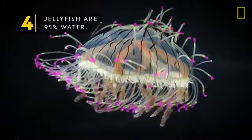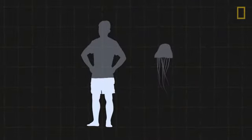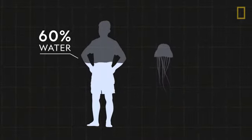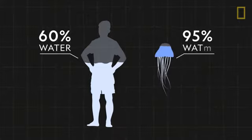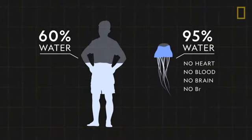Jellyfish are 95% water. To put this in perspective, the average adult human male is about 60% water. But jellyfish are much simpler than humans. They don't have hearts, blood, brains, or bones.